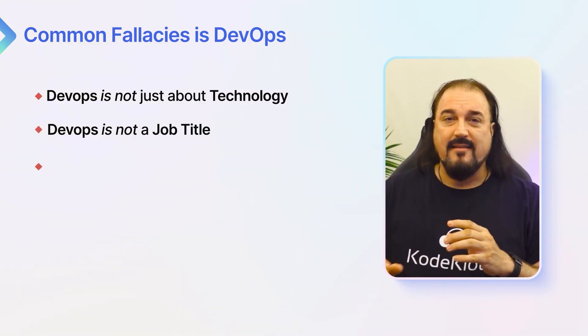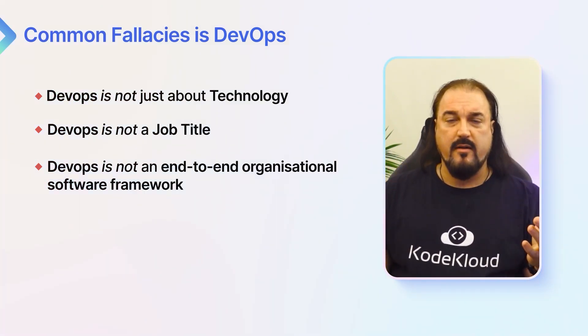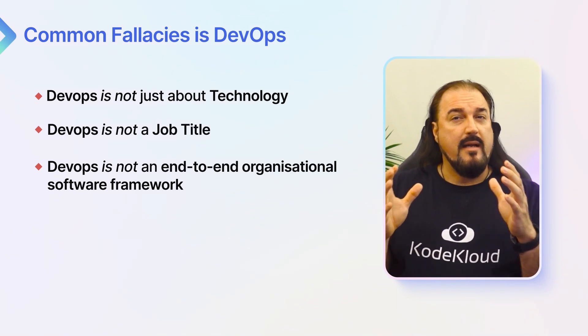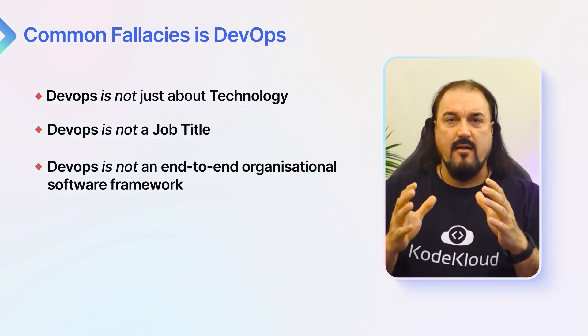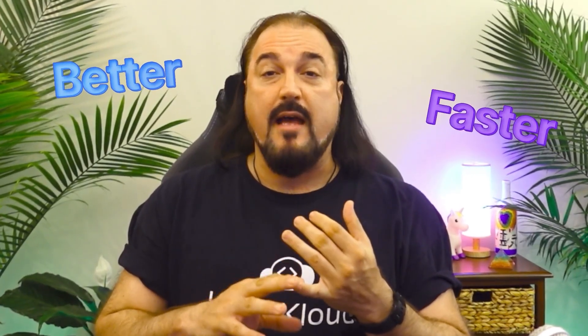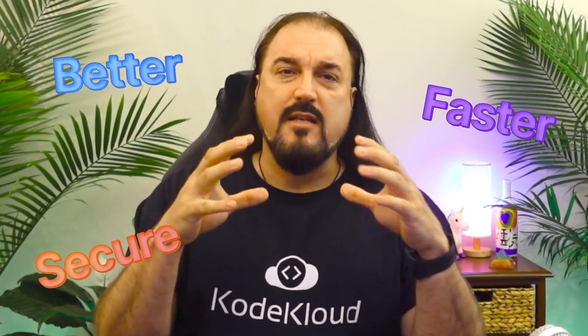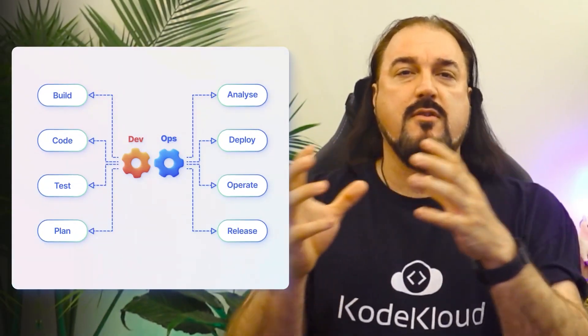Lastly, DevOps is not a complete end-to-end organizational software development framework. It has all the components, but it's not a framework in and of itself that you can run end-to-end to teach you how to put organizations together. DevOps as a framework is really just a supplement that says we can deliver better, faster, and more securely to the business if we continue to experiment and improve. But it mainly focuses around the core roles involved in software delivery and certainly doesn't scale to an entire organization without a larger framework like Agile or Scaled Agile Framework.